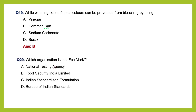Question 20: which organization issues the Ecomark? National Testing Agency, Food Security India Limited, Indian Standardized Formulation, or Bureau of Indian Standards? Ecomark is issued by BIS - Bureau of Indian Standards. It was first introduced in 1991 as a certification mark for products that are ecologically safe according to their prescribed standards. Products covered include food, medicine, chemicals, electronic goods, paper, lubricating oils, and more. The answer is D: Bureau of Indian Standards.